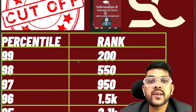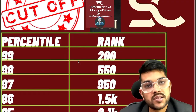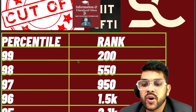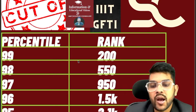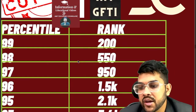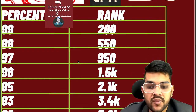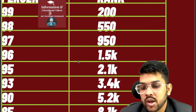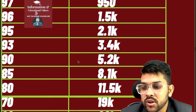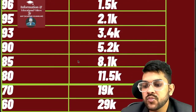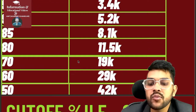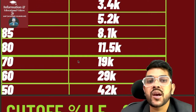After following the current year trend, here is the SC category rank data: 98 percentile → rank 550, 97 → 950, 96 → 1,500, 95 → 2,100, 93 → 3,400, 90 → 5,200, 85 → 8,100, 80 → 11,500, 70 → 19,000, 60 → 29,000, 50 → 42,000. You will get a CRL rank also, but your category rank will be used for seat allocation, which is why I'm providing these figures.